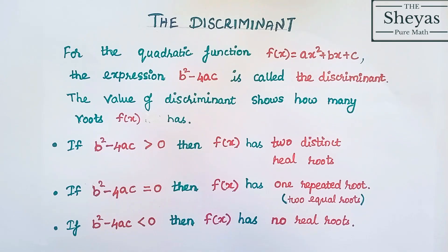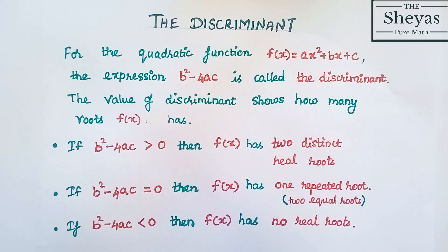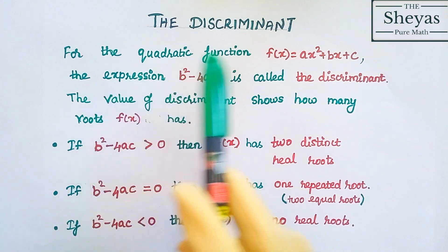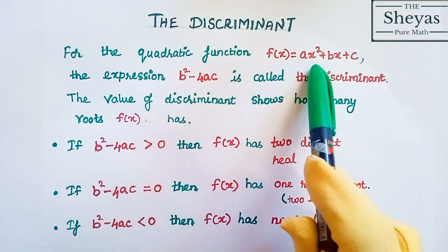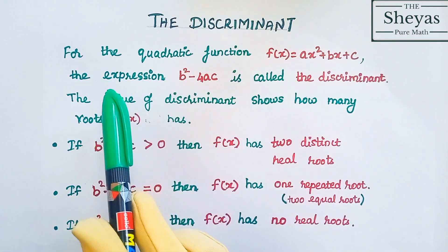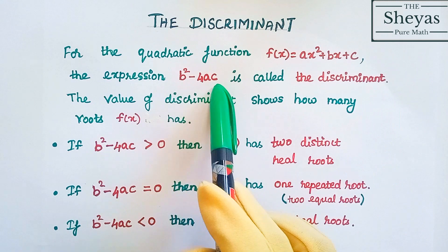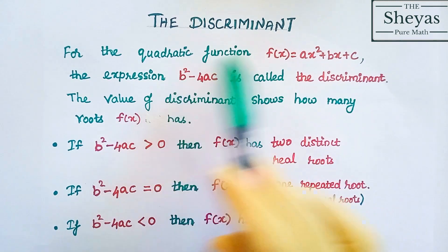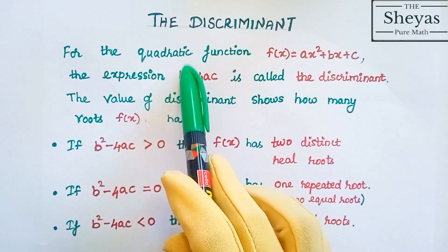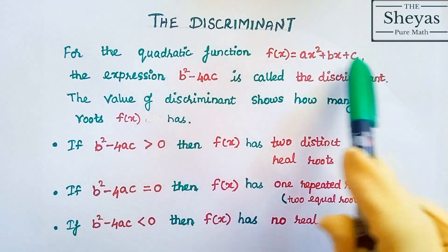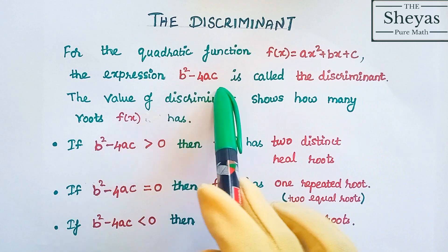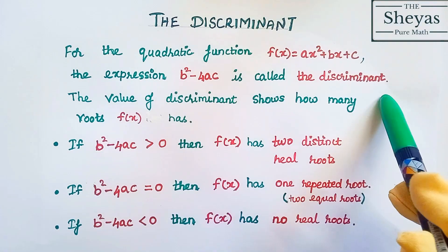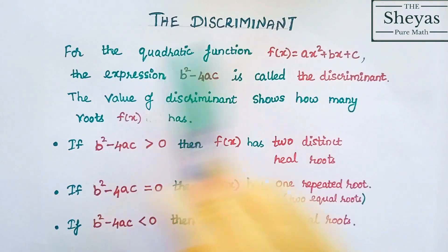Hello friends, today we are going to discuss the discriminant of a quadratic function. For the quadratic function f of x is equal to ax squared plus bx plus c, the expression b squared minus 4ac is called the discriminant. So here b squared minus 4ac is called the discriminant of the quadratic function.